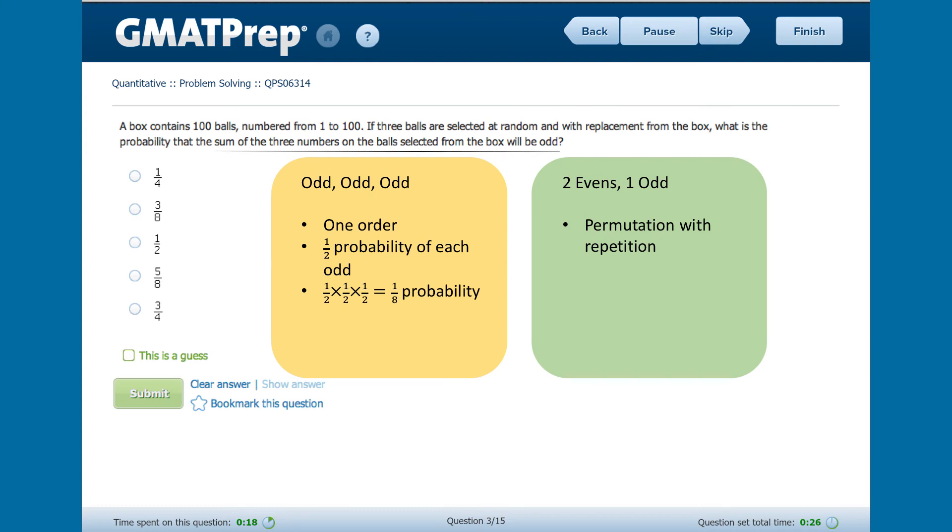But if we really want to use a formula that will be useful when we have more difficult numbers, we can also go ahead and put our formula for permutations with repetitions to use. Now we have three total picks where two are even and identical, and one is odd. So we have three factorial over two factorial times one factorial equals three permutations in which two picks are even and one is odd.